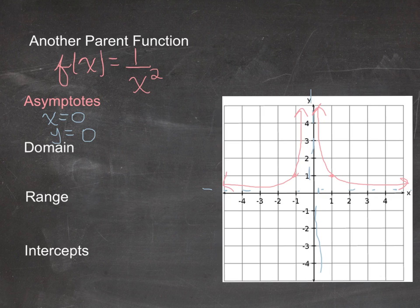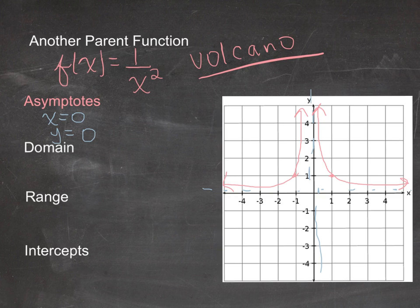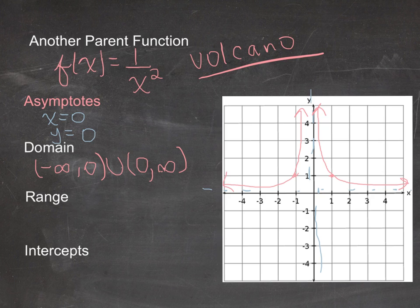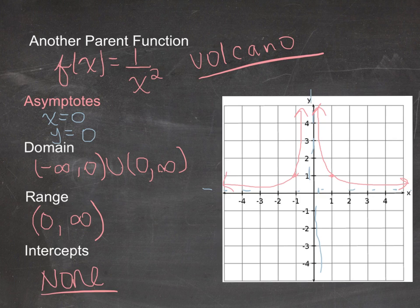So 1/x² looks like a volcano — both sides rise up from the asymptote at x = 0. The domain is (−∞, 0) ∪ (0, ∞), the same as before. The range is different from 1/x: since there are no negative y-values and the graph never crosses the x-axis, the range is (0, ∞). There are no intercepts because of the asymptotes.